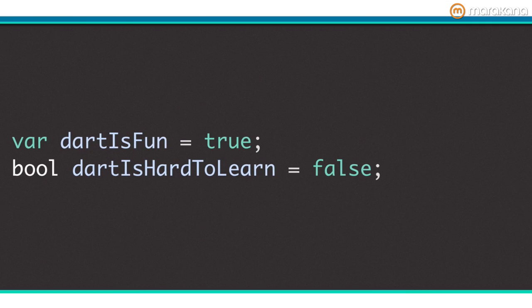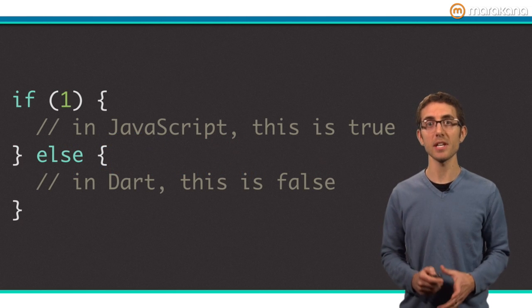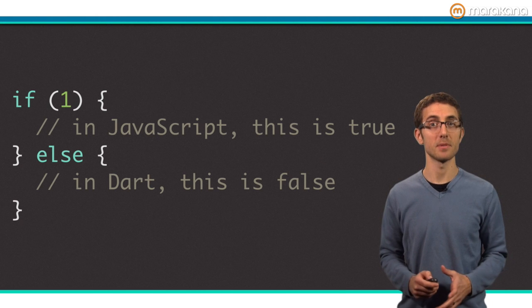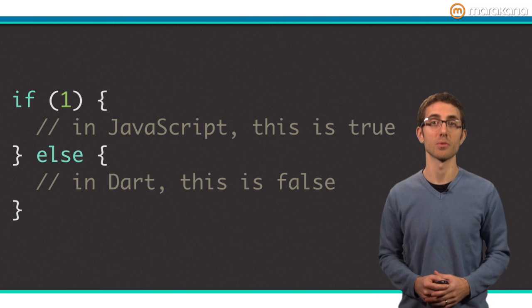Like everything in Dart, Booleans are objects. Specifically, true and false are the only two instances of the bool class. Dart differs from JavaScript in its treatment of truthy and falsy values. In JavaScript, the object 1, non-empty string, and non-null objects are all treated as true.